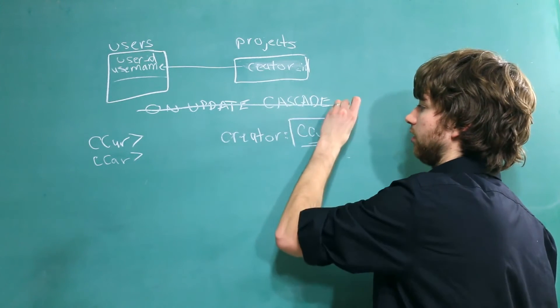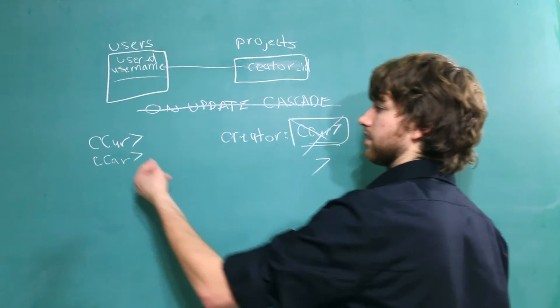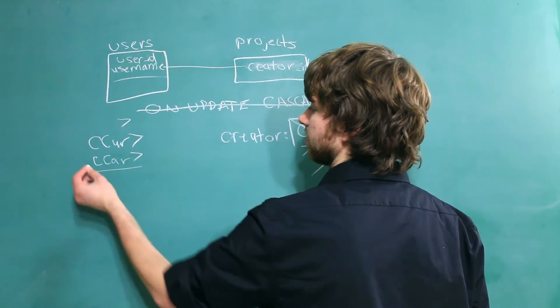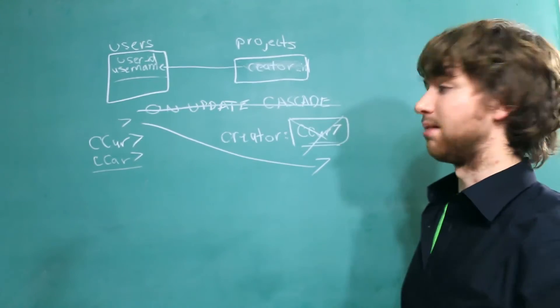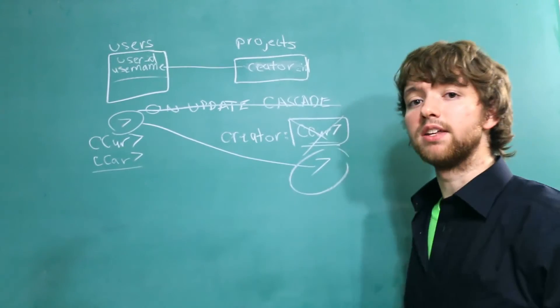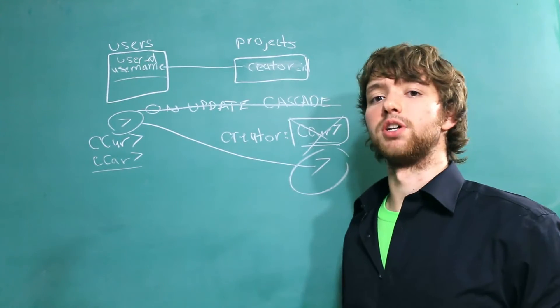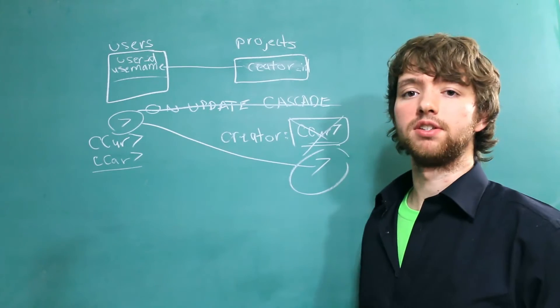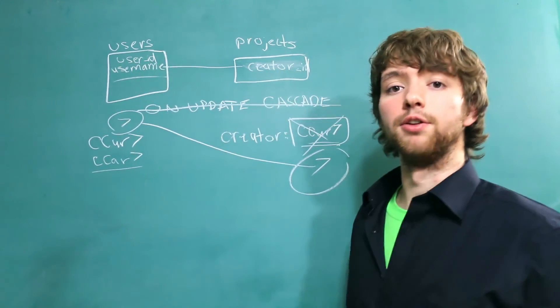And instead of having a username here, we just have a number. And then this Ccur7, with the ID of 7, he can update his name to Ccur7, but his ID still stays the same, and his connection isn't broken anymore. That is something we can do in Oracle. And this is no longer in our imaginary world where Oracle doesn't care. This actually does work. That's why you often see something like creator ID referencing another column in another table.